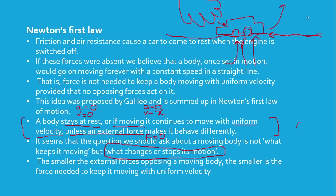Things set in motion millions or hundreds of years ago would still be moving now, but they don't because friction and other forces come into play. The smaller the external opposing forces on a moving body, the smaller the force needed to keep it moving with uniform velocity.